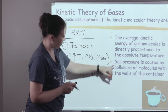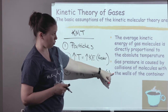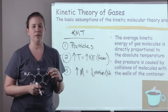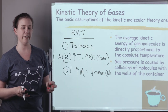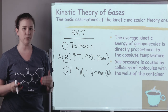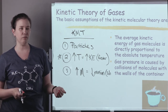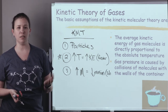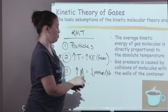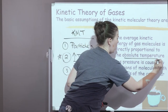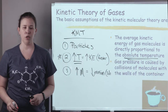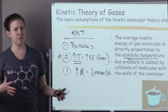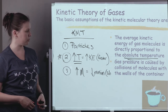Gas pressure is caused by collisions with the walls of the container. One last thing to mention about gas particles is that their motion is defined by something called the Kelvin scale — absolute energy. Every conversion or calculation we do in gas laws needs to be in the Kelvin scale, because we always want this temperature to be the absolute temperature. You may have heard of absolute zero, where there is absolutely zero particle motion. That's the scale we want to be on, so we're always going to want to convert to the Kelvin scale.